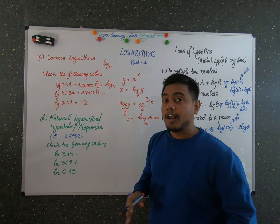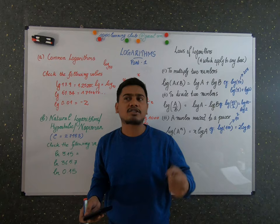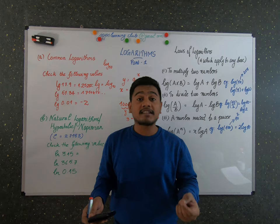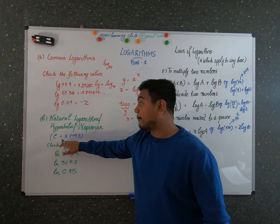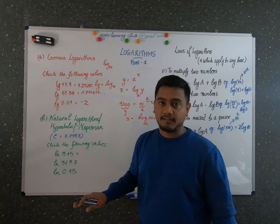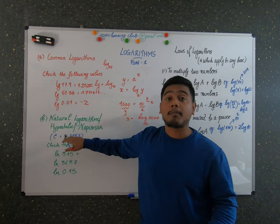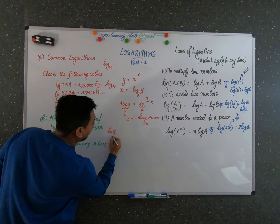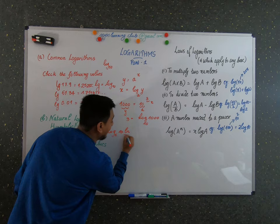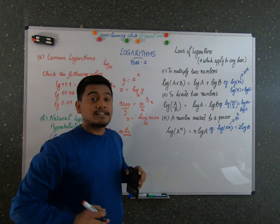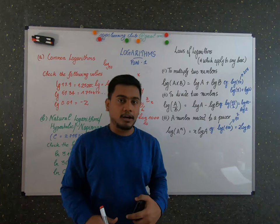Next, natural logarithms are logarithms having base E. E is a mathematical constant used in all engineering and scientific laws. The value of E is 2.7183, and it is used in all exponential functions. When the base is E, you abbreviate it as LN. In the scientific calculator, you can see the LN term — this is the natural logarithm, also called hyperbolic or Naperian logarithm.